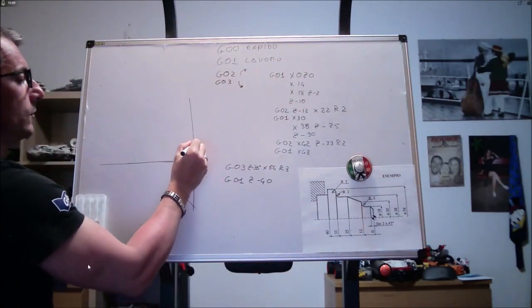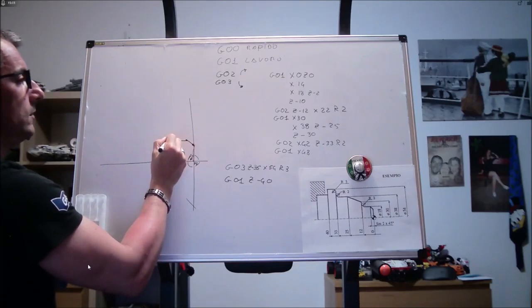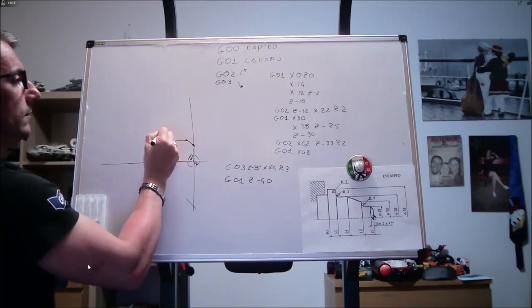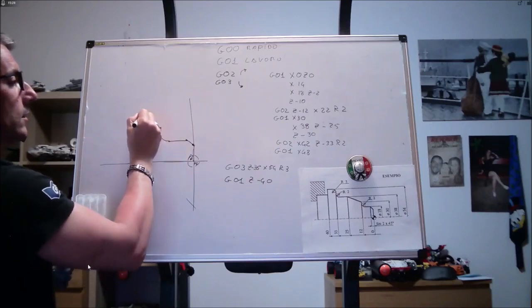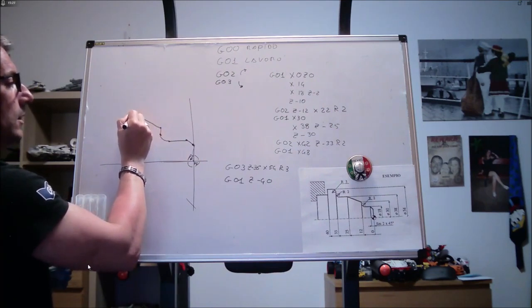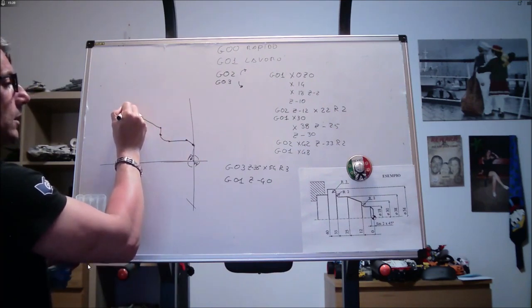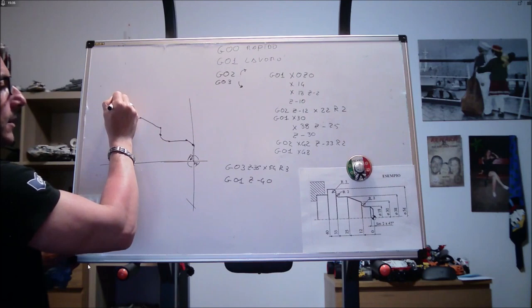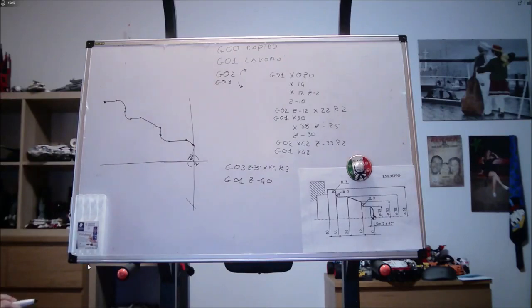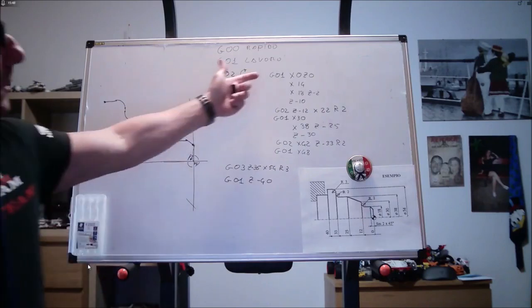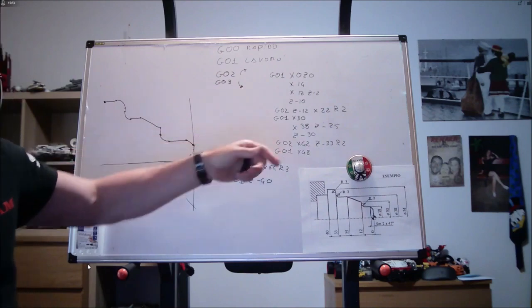Quindi, x0, x 14, x 18, z meno 2, z meno 10, g02, z meno 12, x 22, r 2, x 30, x 38, z meno 25, z meno 30, g02, x 42, r 2, g01, x 48, g03, z meno 36, x 54, r 3, g01, z meno 40. Questi sono tutti i nostri punti. Non è poi così difficile. Si tratta solo di ricordarci di usare il g01, il g02, il g01, il g02, il g01, il g02, il g01.